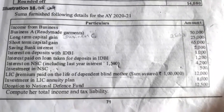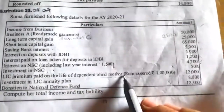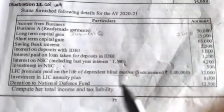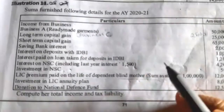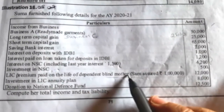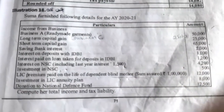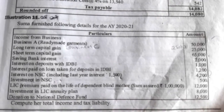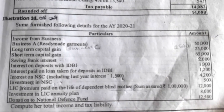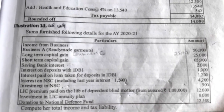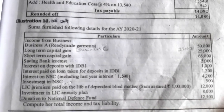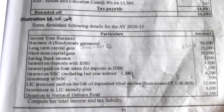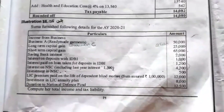One more deduction she can claim is for the dependent blind mother. She can claim deduction under Section 80DD. Under Section 80DD, the blind mother is her dependent relative with disability. When there is a person with disability she can claim deduction under Section 80DD. For a person with disability the deduction is rupees 75,000; if the person is with a severe disability then she can claim deduction of rupees 1,25,000 — irrespective of actual amount incurred. Here she can claim a fixed deduction for the blind mother under Section 80DD, that is 75,000.